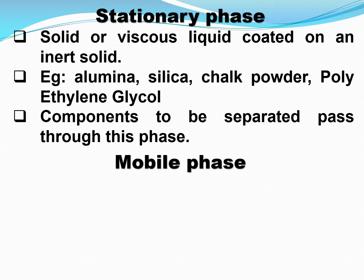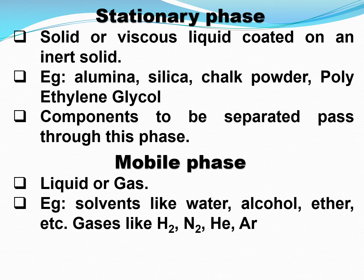Now let us look at the mobile phase. The mobile phase can be a liquid or a gas. Liquids include normal solvents like water, alcohol, ether, etc. Gases like hydrogen, nitrogen, helium, argon, etc. can be used as mobile phases.